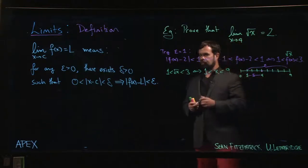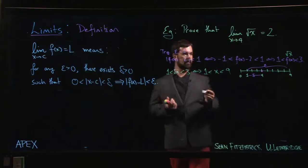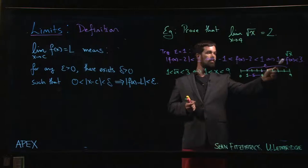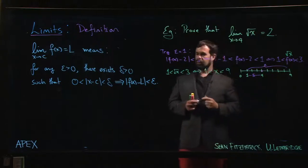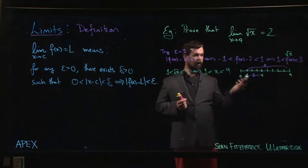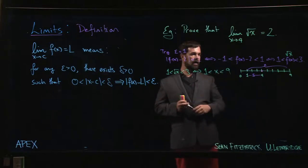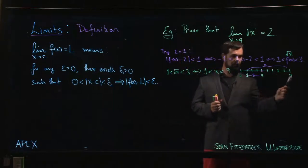And we did some playing around. We said, okay, if epsilon is 1, then that means that f of x has to be between 1 and 3. And f of x is just square root, so I can square through, get to here, and then I can kind of put things down on the number line.